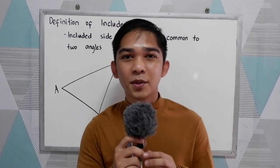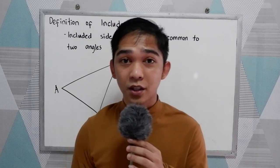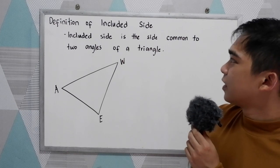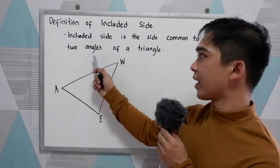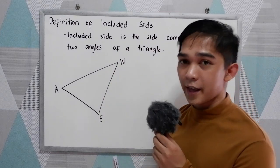Good day everyone. Today we will be discussing the definition of included side. Included side is the side common to two angles of a triangle.